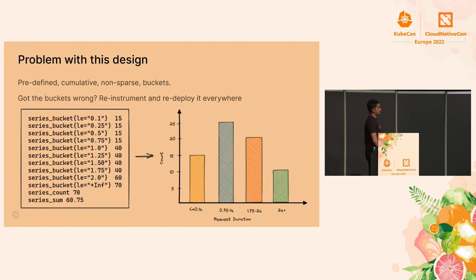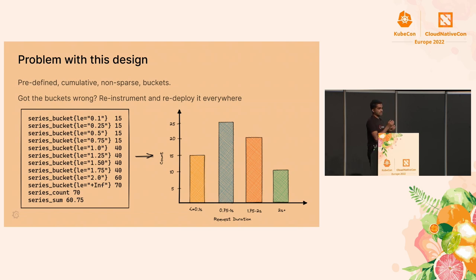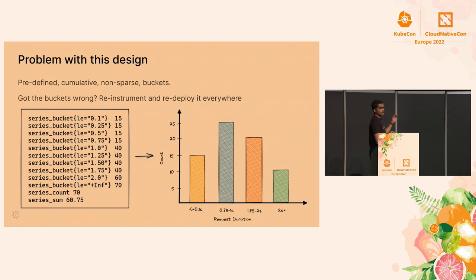This creates a problem. The first problem is we have to pre-define bucket boundaries before instrumenting — you have to mention them in the instrumentation code, and it can take some experimentation to get them right. The buckets are also cumulative. If you define many bucket boundaries, a lot of them can end up empty, but each time series still takes memory, disk space, and other resources, and it slows down queries.